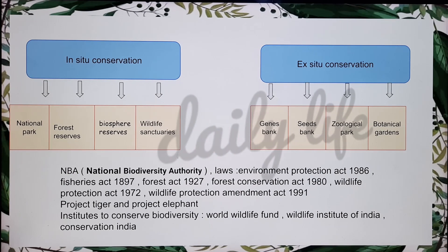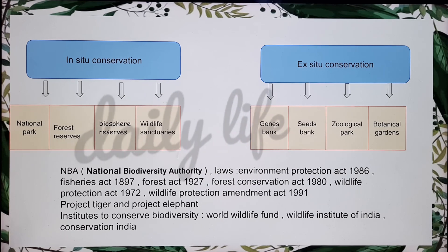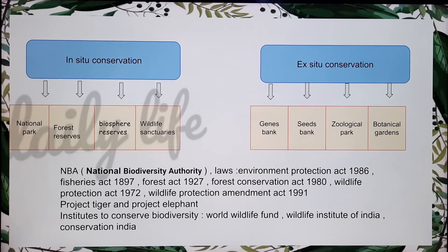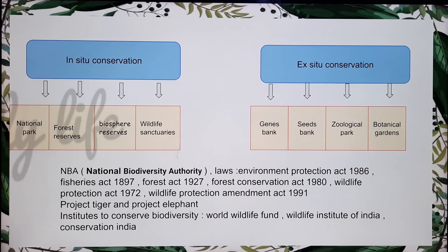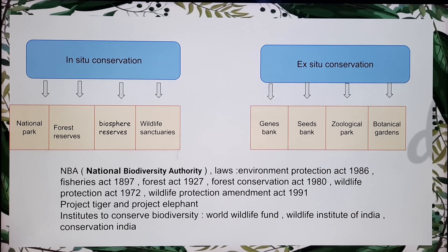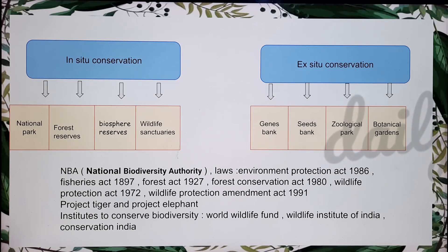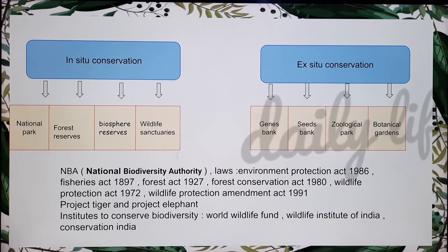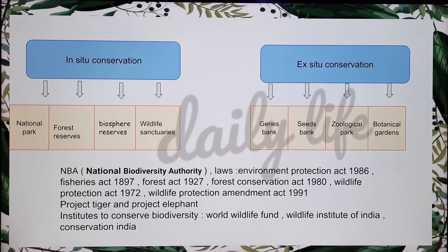Now let's go to ex-situ conservation. First comes the gene bank. A gene bank stores genetic materials, which are kept at a temperature of minus 196 degrees Celsius using liquid nitrogen. These genetic materials are kept in artificial ecosystems so that those species can survive. Next comes the seed bank. A seed bank is a store where seeds are stored for planting purposes so that shortage of seeds doesn't occur.